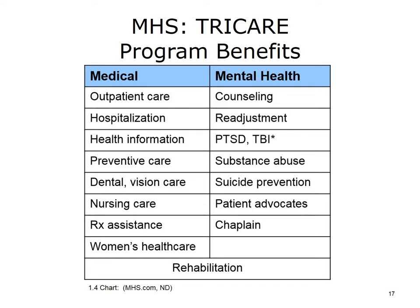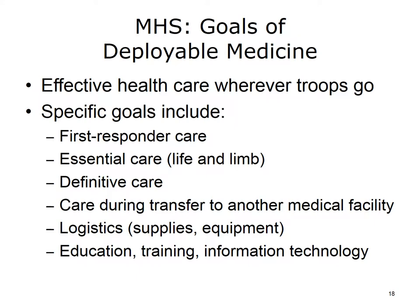Rehabilitation may be needed for physical and/or psychological trauma. Military conflicts arise all over the world, and the Department of Defense must be able to provide health care services wherever U.S. troops need to go. The Military Health System provides first responder care at the point of injury, essential care to preserve life and limb, and definitive care that stabilizes or rehabilitates soldiers at the location of conflict. Care is also provided during transfer to another medical facility, and logistical support optimizes the use of medical supplies, materials, and up-to-date equipment. The Military Health System also provides education, training, and medical information technology services.